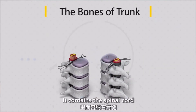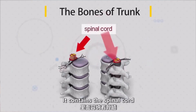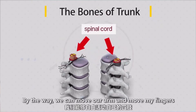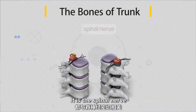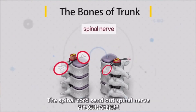The vertebral canal contains the spinal cord. By the way, we can move our arm and move our fingers — it depends on the spinal cord and the spinal nerve. The spinal cord sends out the spinal nerve.